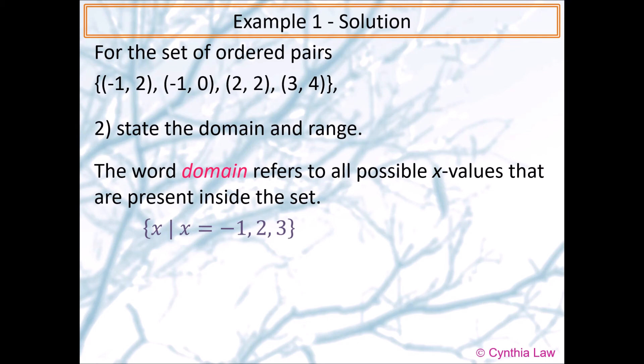So this is one way to write down the set of values. Remember our braces. And then we say x because we are trying to talk about the domain. And then we draw a vertical line, which means such as. And then we have x equals to negative one, or two, or three. So it's not all three numbers at the same time. The comma means they could be different numbers.